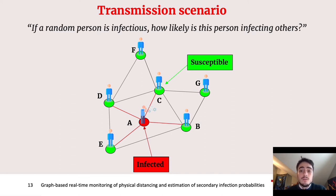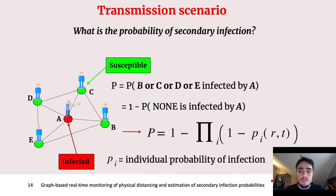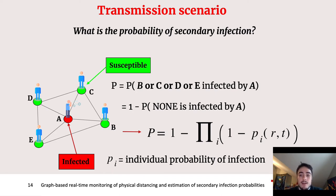Furthermore, since the time window considered in constructing this contact graph was much smaller than the estimated incubation time of COVID-19, we expect to observe only one transmission of the disease, and this will happen only to the nearest neighbors of the infected, in this case A. We can then focus our attention on the nearest neighbors of A and give an estimate of what is the probability to have an infection from A to B, C, D, or E. This will be given by one minus the probability that no transmission will happen, and by generalizing this to a neighborhood of N individuals, we can estimate the probability of secondary infection.